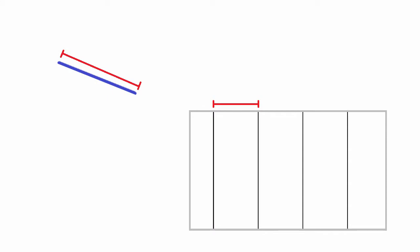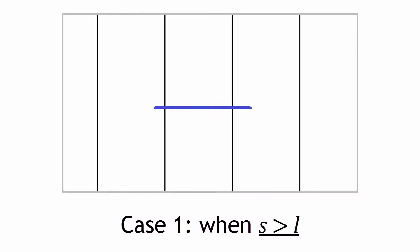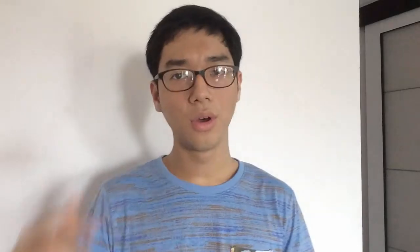There are two things we could change: the size of the stick and the distance between the lines. I'll assign variables — the length of the stick is S and the distance between the parallel lines is L. There are two possible cases: the stick is longer than the line spacing (S bigger than L), or the stick is equal to or shorter than the spacing (L bigger than or equal to S). The first case is harder, so for this video I'll focus on the second case where the stick is shorter than the spacing. I'll leave a link to Wikipedia for the first case.